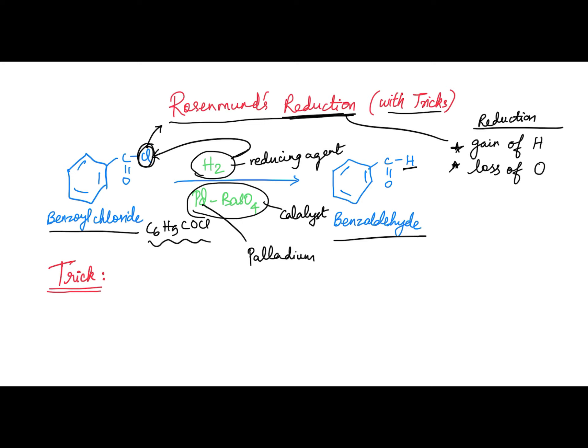Now for the trick to remember this reaction: if you see Rosenmann's reduction, it has an 'O'. Benzoyl chloride also has an 'O'. The catalyst Pd/BaSO₄ — sulfate also has an 'O'. Similarly, the product also has an 'O'. So if in an exam you don't know the catalyst, remember that Rosenmann's reduction has 'O', so the catalyst should also have an 'O'. Once you practice many times, there is no need for such tricks — it will automatically register in your mind.